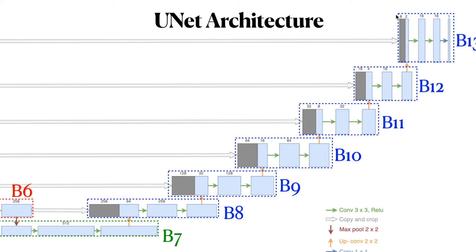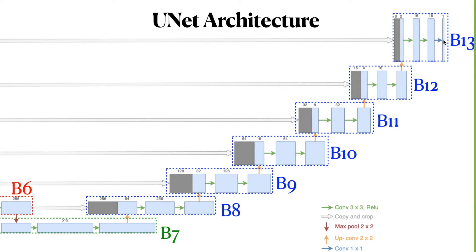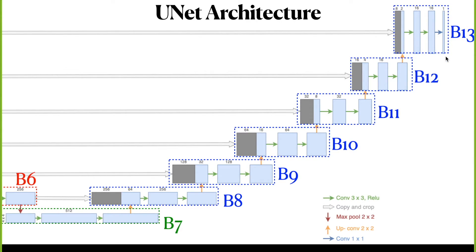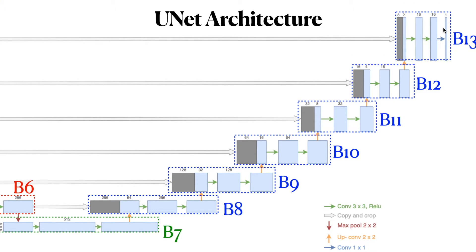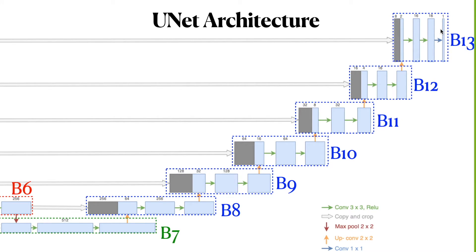We repeat similar operations from box 8 to box 13. At box 13, we concatenate the feature maps from B1 as well, then pass through two convolutional layers. The last layer for B13 is a 1×1 convolutional layer with a sigmoid activation function. The sigmoid function confines the pixel values in a range of 0 to 1, so the values on the last feature map look like a probability distribution. That is basically the U-Net architecture used for our model.